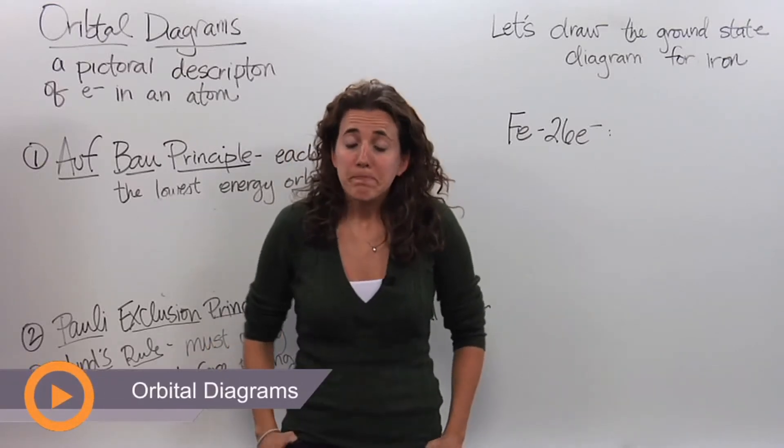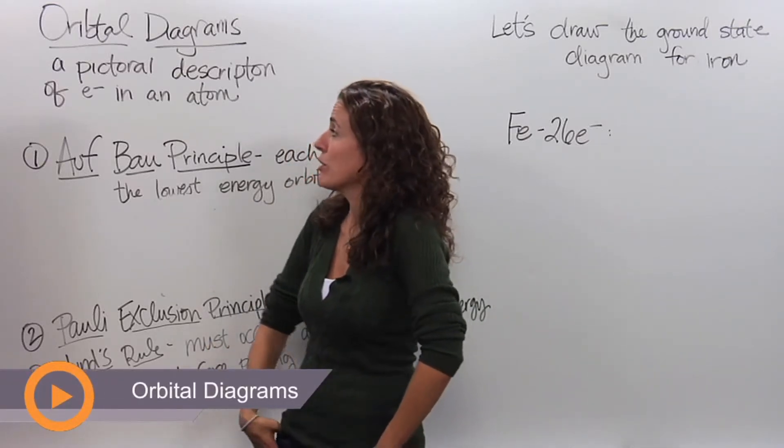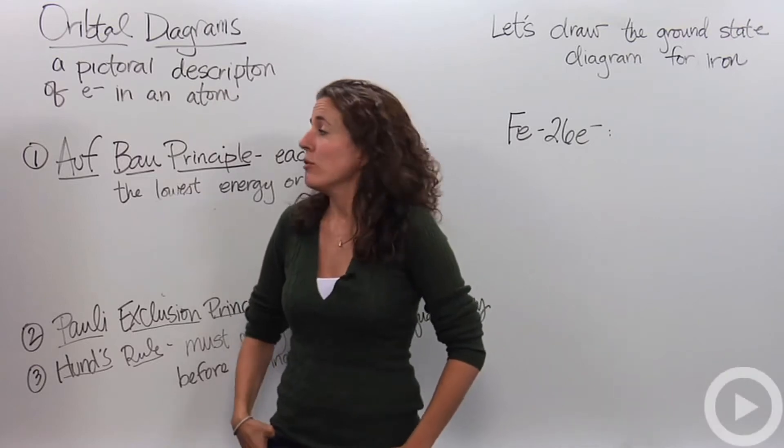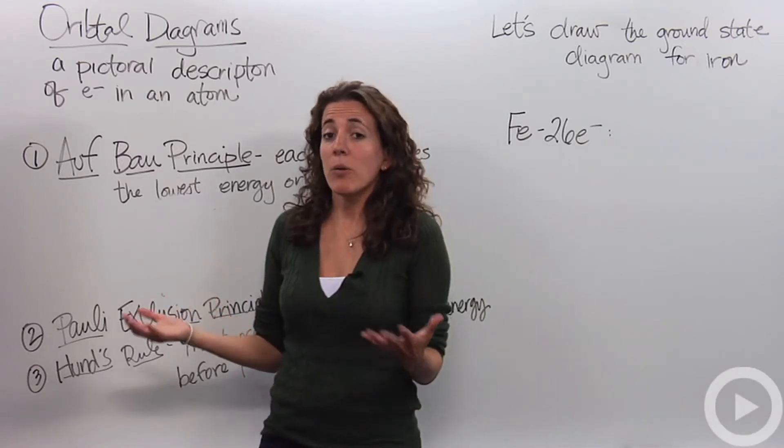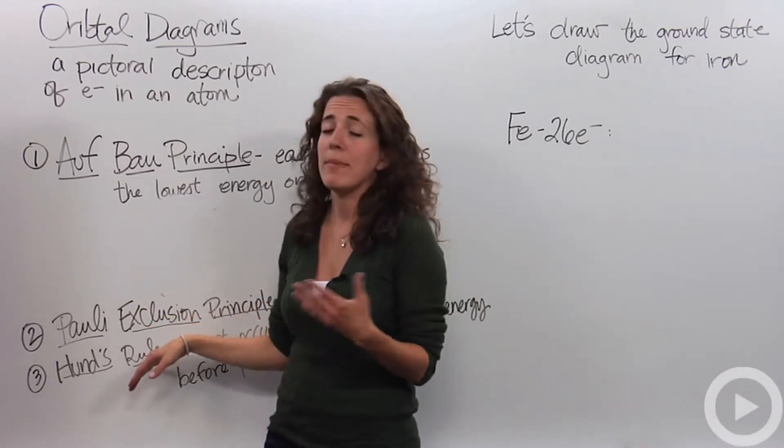Alright, so let's talk about orbital diagrams. Orbital diagrams are a pictorial description of electrons in an atom. In order to figure out where electrons go in an atom, we have to follow three main rules.